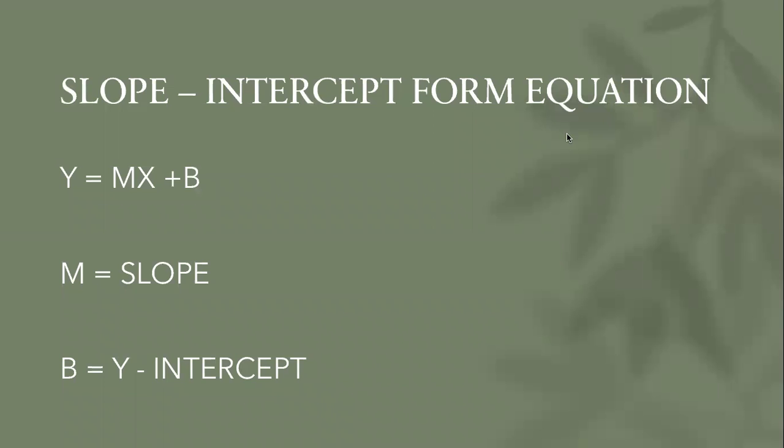Slope intercept form. Y equals mx plus b. M stands for slope, and b stands for y-intercept. Oh my gosh, so easy. Good job.